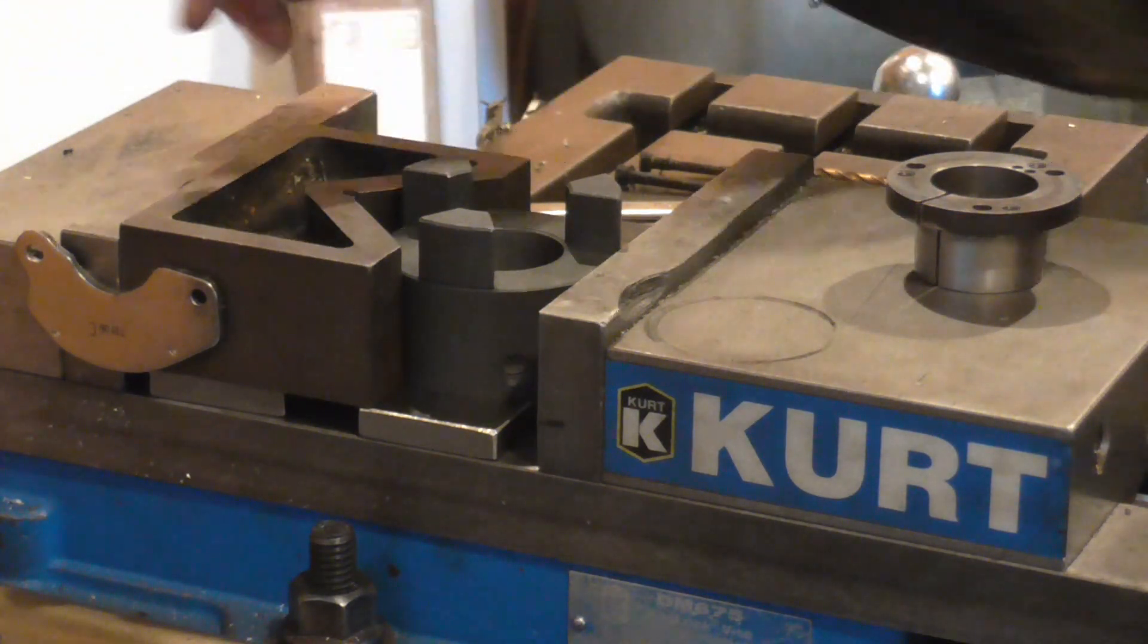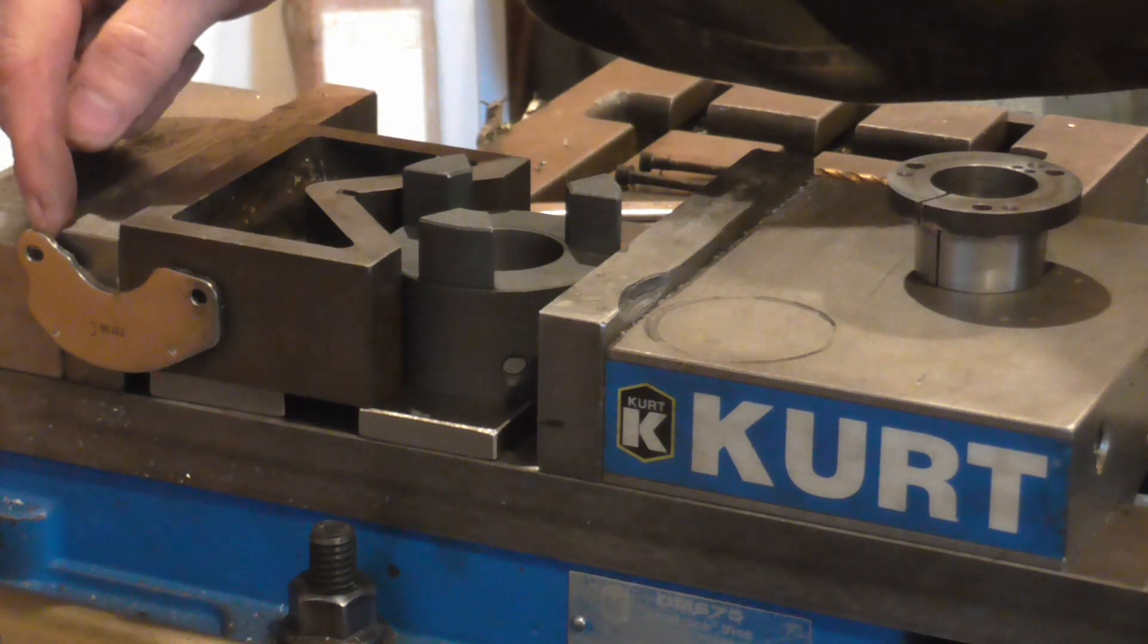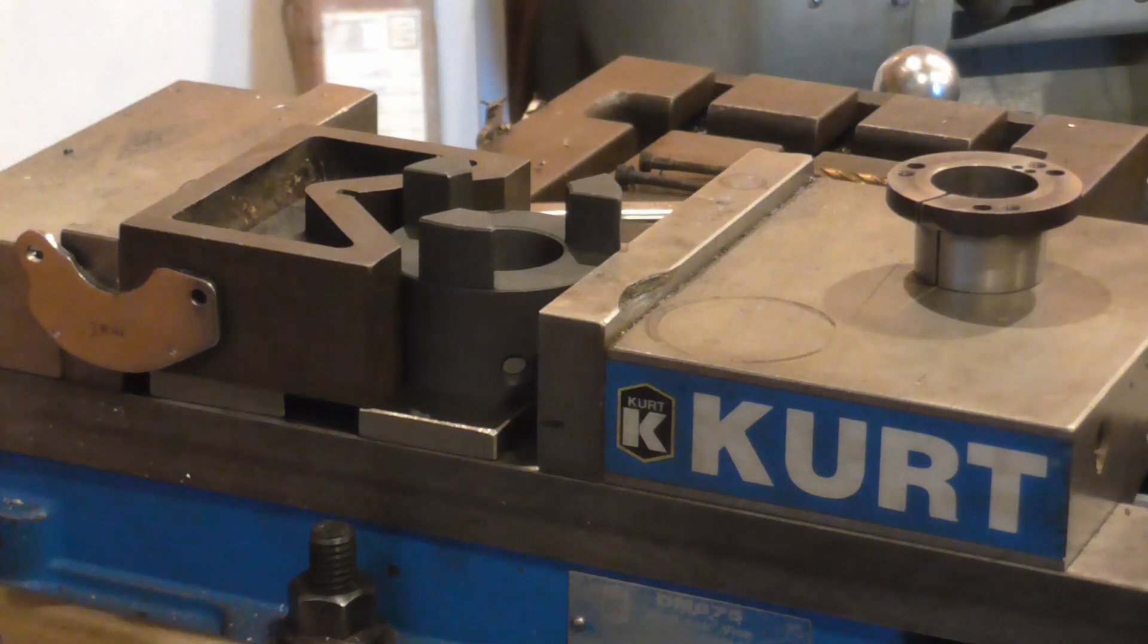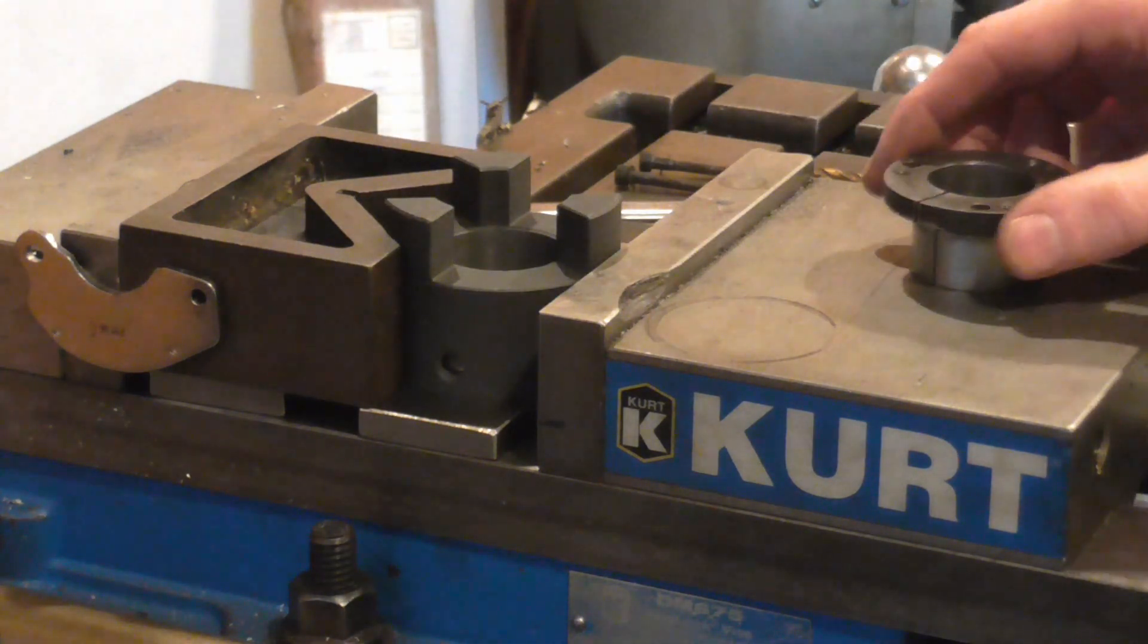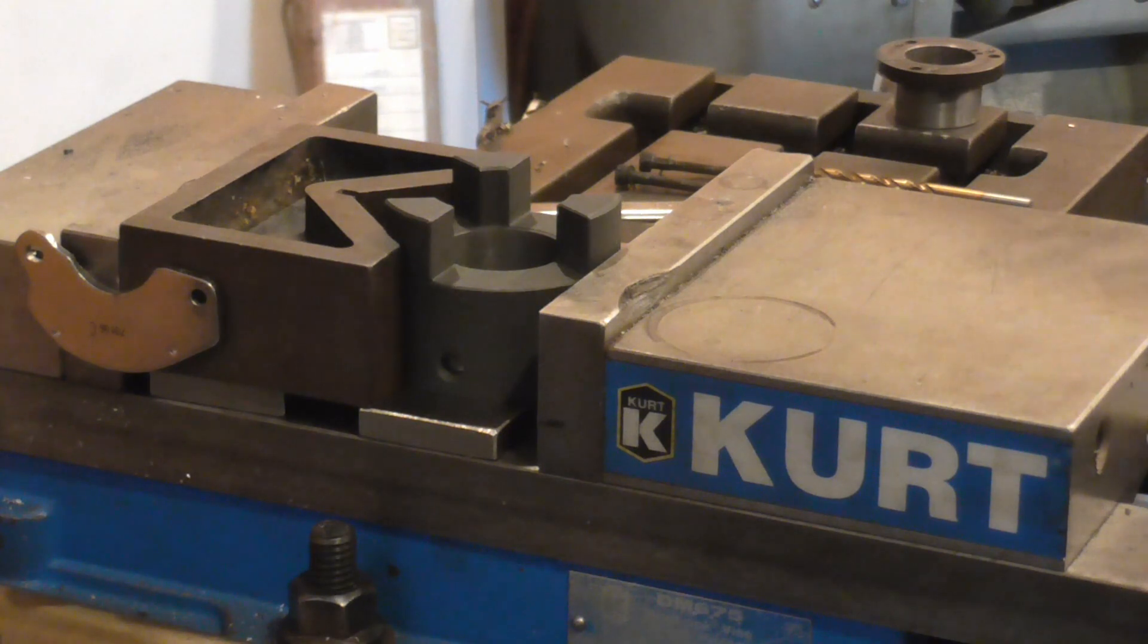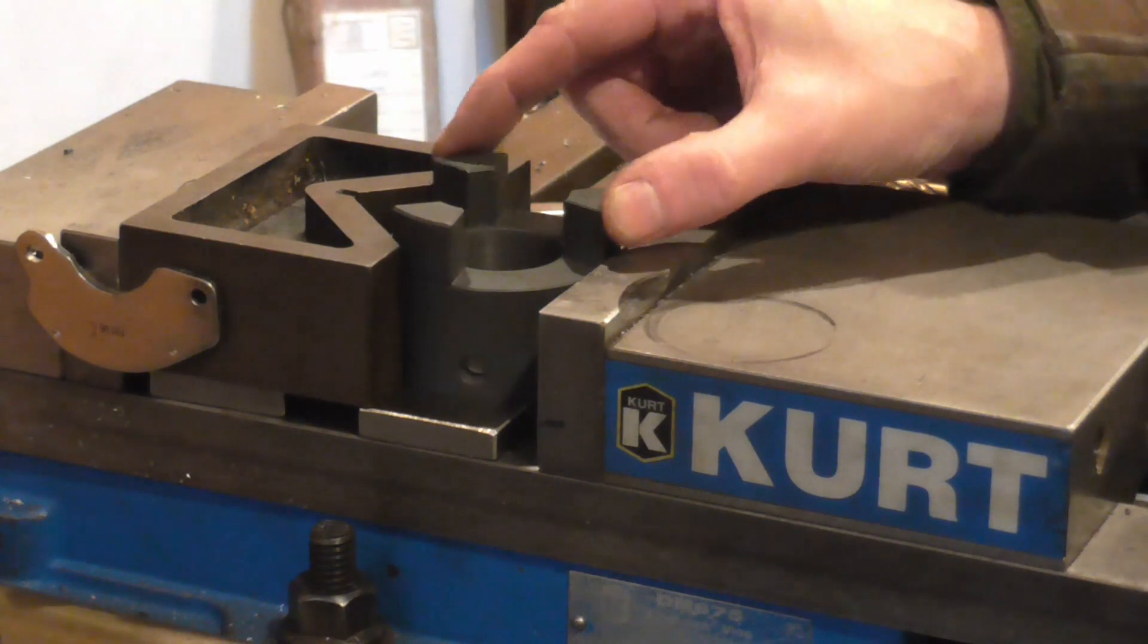The jaws get in the way of finding the centre accurately. So the V-block is kept in position by an old hard drive head magnet at the back there. So I've got repeatability. So now I've got the DRO set up for a 42mm PCD to do a three hole pattern. And I'm just going to align this by eye.